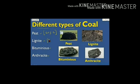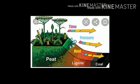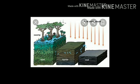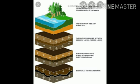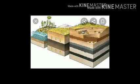Coal was formed from the remains of plants that grew in warm, humid swamps 300 to 400 million years ago. These plants died and their remains got buried in the swampy soil. Over time, these remains were covered with layers of sediment such as mud and sand. In low oxygen conditions, the buried plant material formed a dark brown material called peat. Gradually, more and more sediments got deposited over peat. Peat was compressed between layers of sediment and formed lignite. Further compression resulted in the formation of bituminous coal, and even further compression resulted in the formation of anthracite.